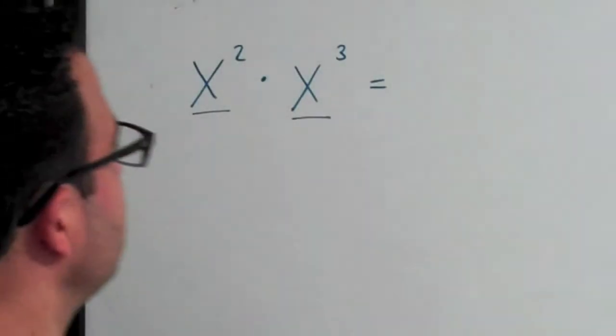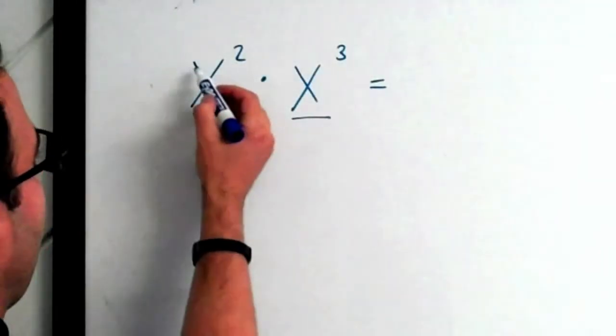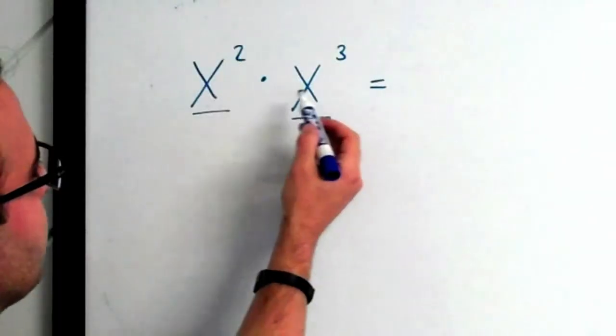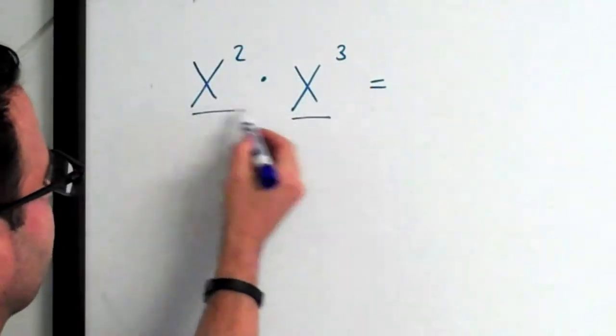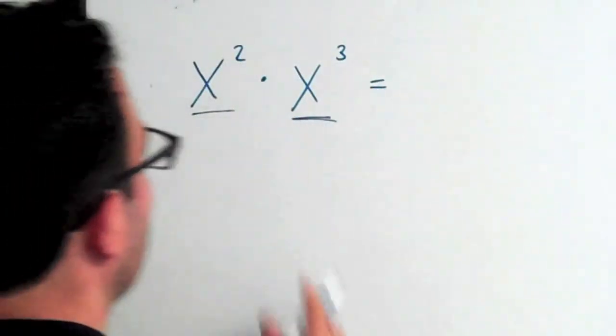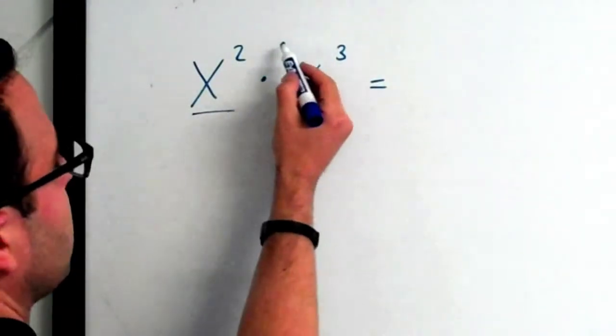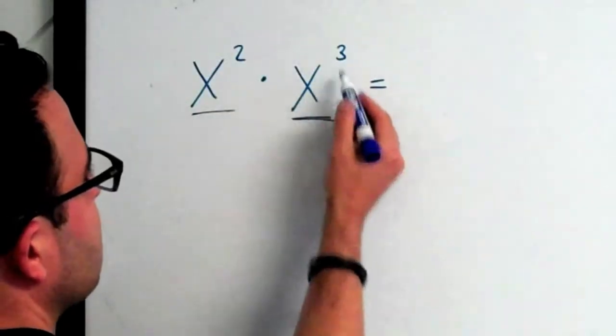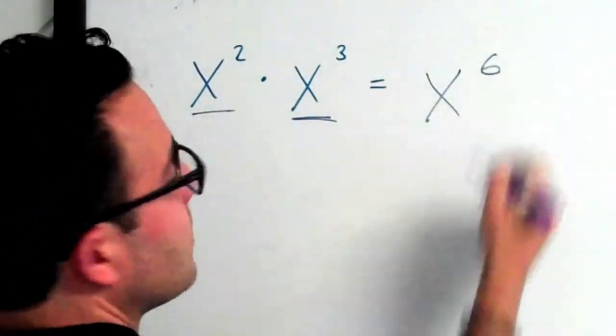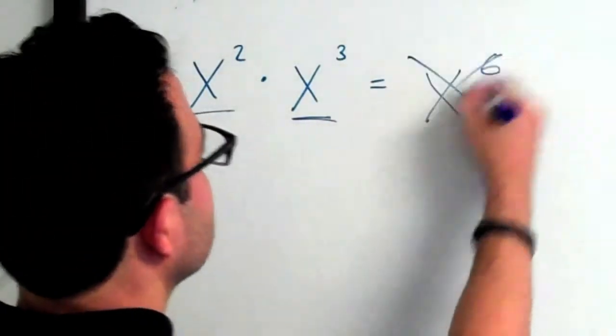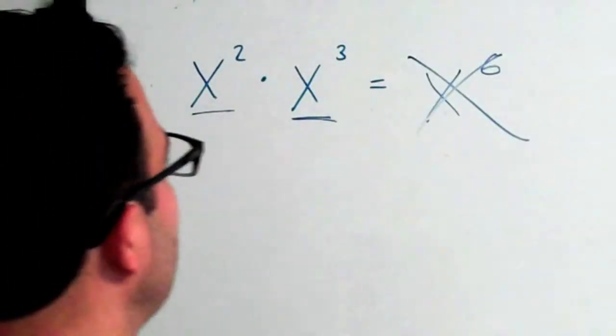One of the exponent rules students confuse is if you have, say, x squared times x cubed. You have the same coefficient here and you're just multiplying x squared times x cubed. Students will multiply the exponents, so they'll say x squared times x cubed is x to the 6th, but that's wrong. You don't do that. Let's get this straight once and for all.